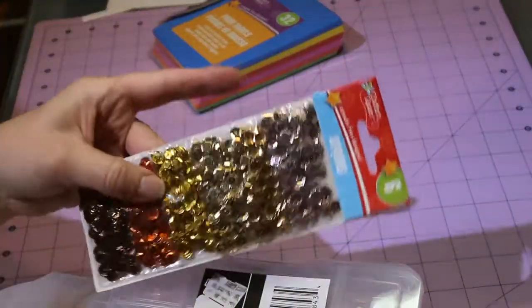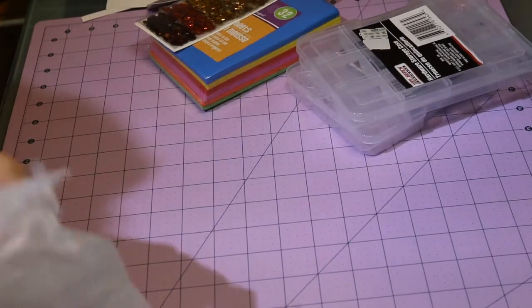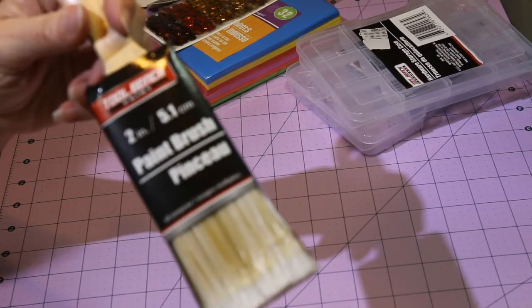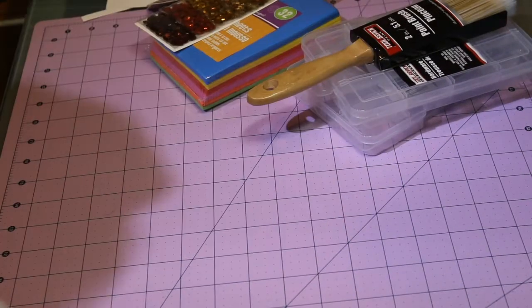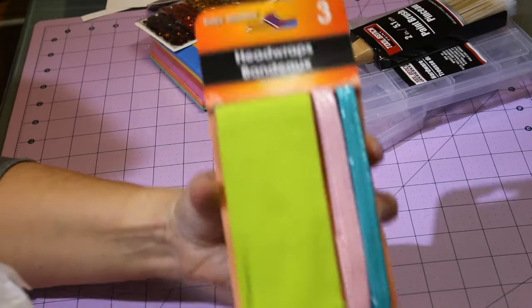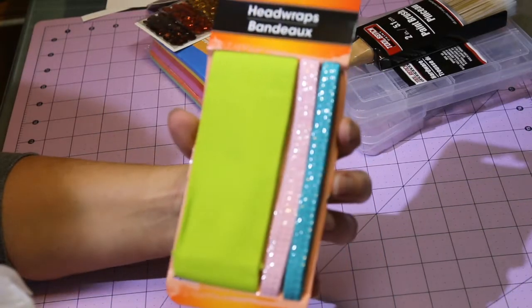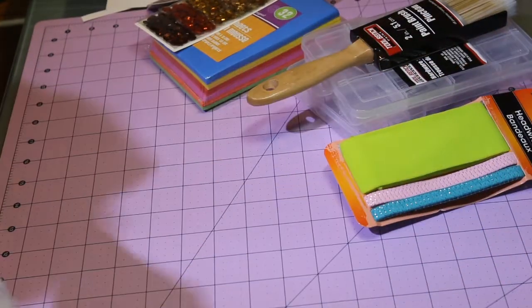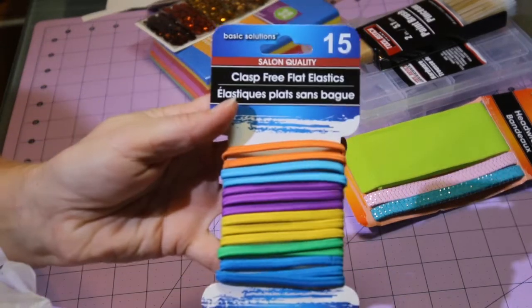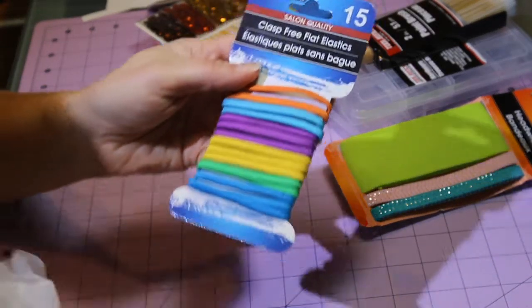Because once you open these little bags, you can't seal them back up, and I figured this way I could just open it up and pick what I wanted. I got a paintbrush for some stuff I'm working on around the house. I got these head wraps - I thought those were cute for a gift. And some clasp-free flat elastics. These are for a gift as well. That was all at Dollar Tree.